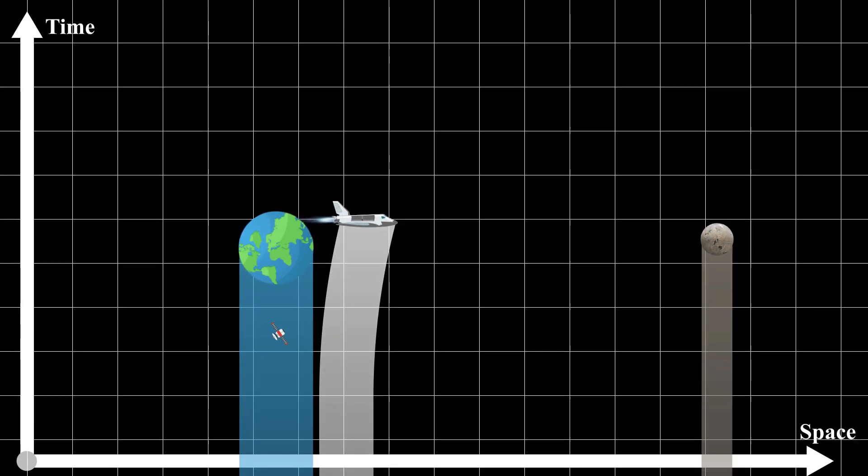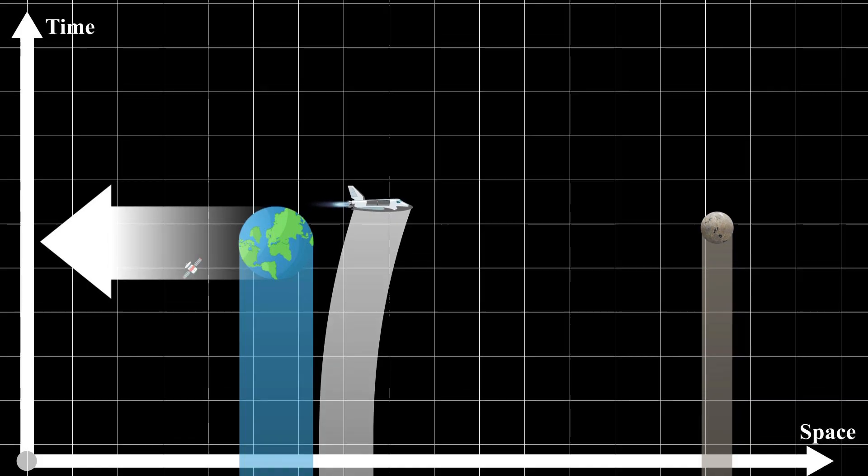From the perspective of an astronaut in the spacecraft, it is Earth that is moving away quickly.